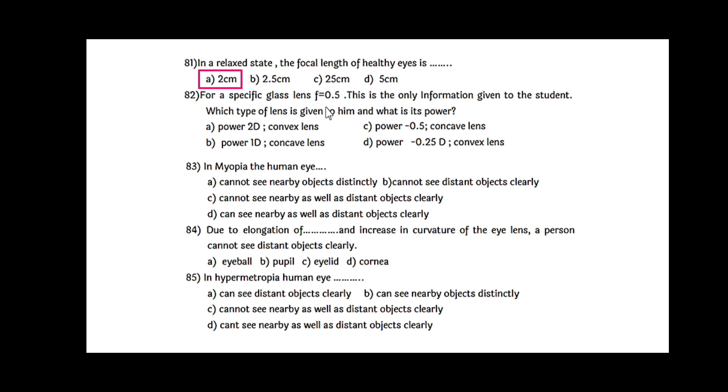For a specific glass lens of 0.5, which type of lens is given and what is its power? Power of lens is reciprocal of the focal length of the lens provided that focal length is measured in meters. So here we can say that power is 2D and the lens used is convex lens. Next, in myopia, that is near sightedness.